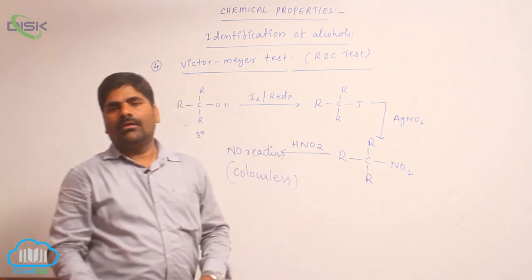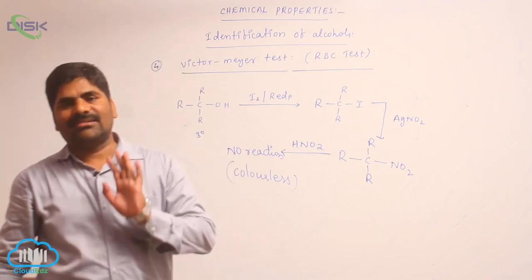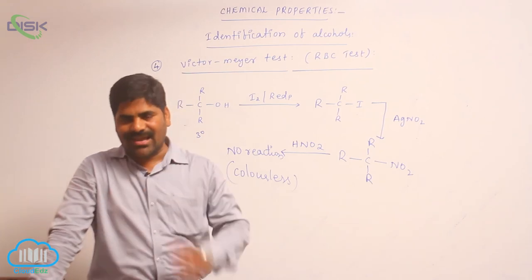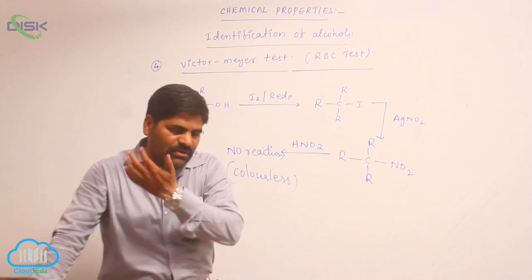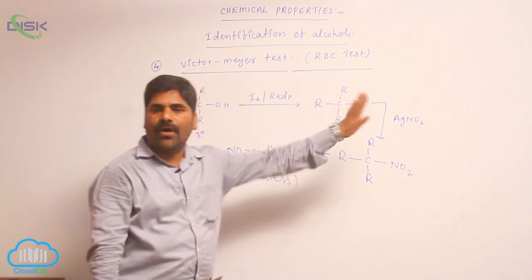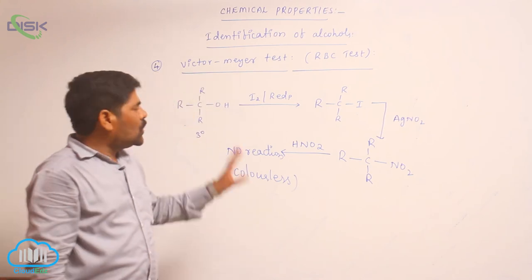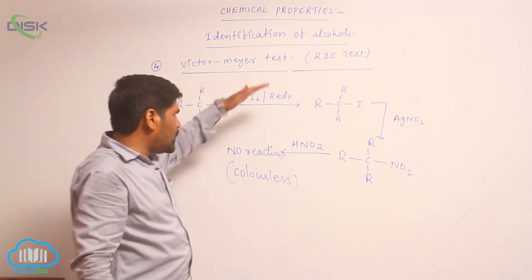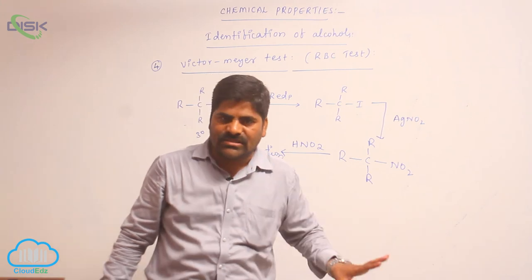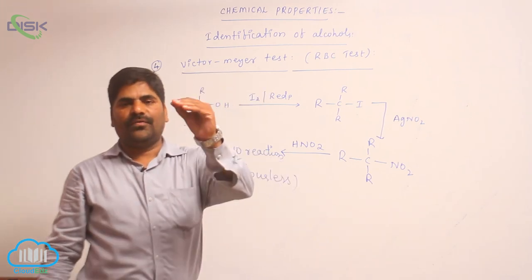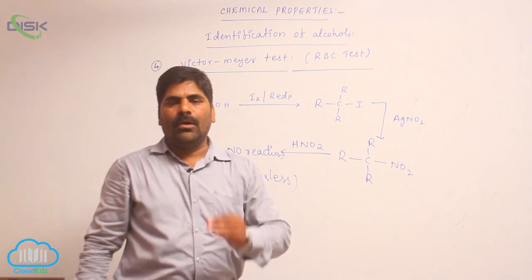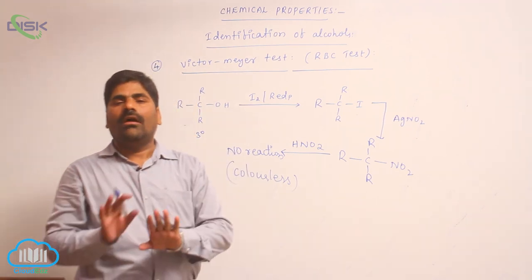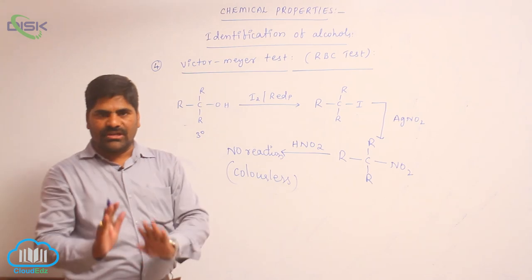Due to absence of acidic hydrogen, the third-degree alcohol will not react with nitrous acid. But due to presence of acidic hydrogen, first and second-degree alcohols do react with nitrous acid. So, in the Victor Meyer (RBC) test: first-degree alcohol gives red color in basic medium, second-degree alcohol gives blue color, and third-degree alcohol gives colorless. These are the identification tests of alcohols.